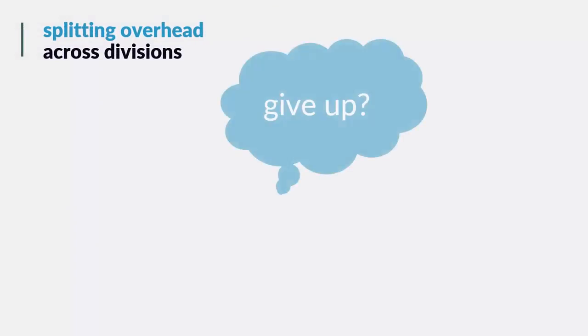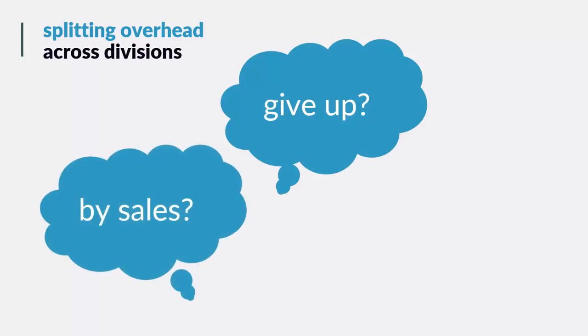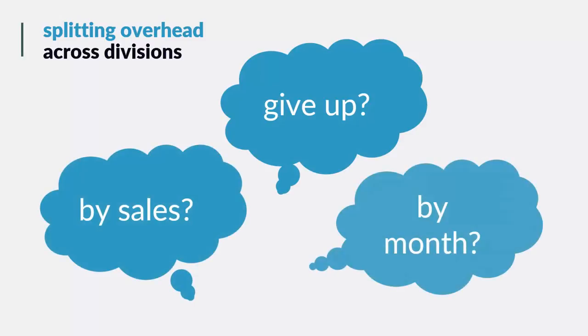A lot of contractors get hung up on how to split overhead across divisions. Most give up and don't even try, but for those who do try the vast majority take the sales approach — splitting overhead by a percentage of sales for each division. While this is tempting because it's easy, we'd argue that not only is it not accurate, it could actually hurt a contractor.